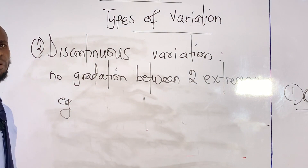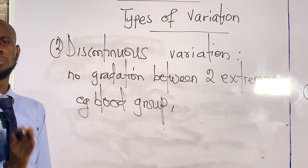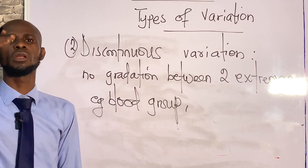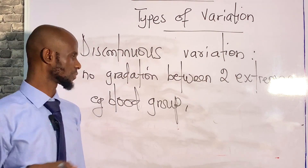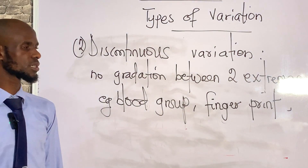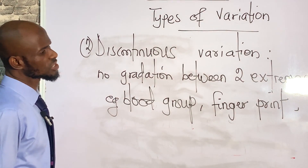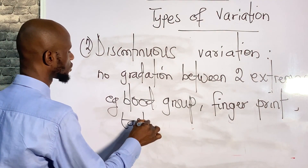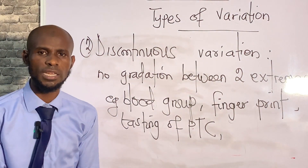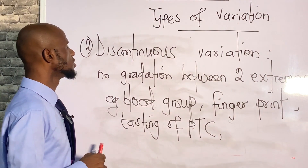For example, we have blood group. There are only four types of blood group: A, AB, O, and B. There is no blood group A-small or B-B-B — we only have four, with no gradation. Another example is fingerprints, where we have just four major types. For PTC tasting, there are just two possibilities: either you can taste PTC or you cannot — there is nothing like 'I can taste it a little.' There is no gradation, only two combinations.